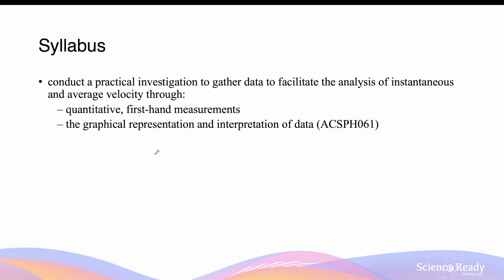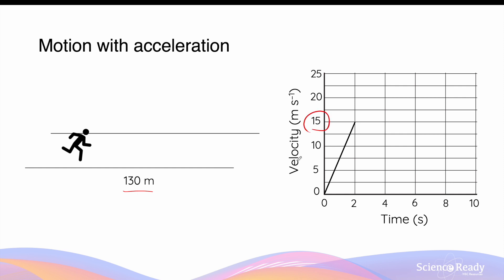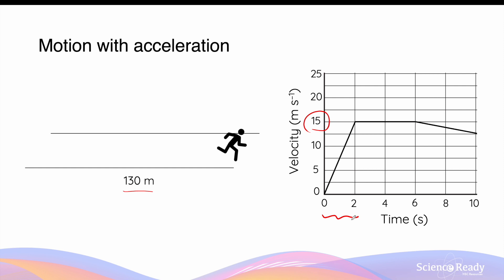This video is on instantaneous and average velocity. Consider a simple scenario: a person running along a straight track of 130 meters. Initially at rest, he quickly accelerates to a velocity of 15 meters per second in the first two seconds, maintains that velocity for the next six seconds, and towards the end gets tired and slows down, decreasing his velocity to about 12.5 meters per second.